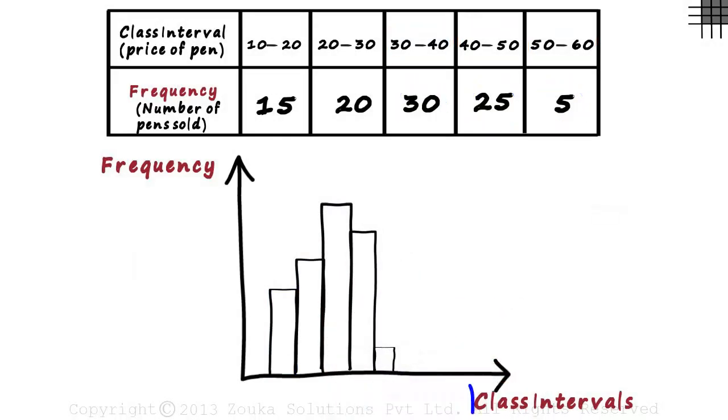We use histograms to represent class intervals. While drawing a histogram, we have the class intervals on the x axis, while for a bar graph, we have categories.